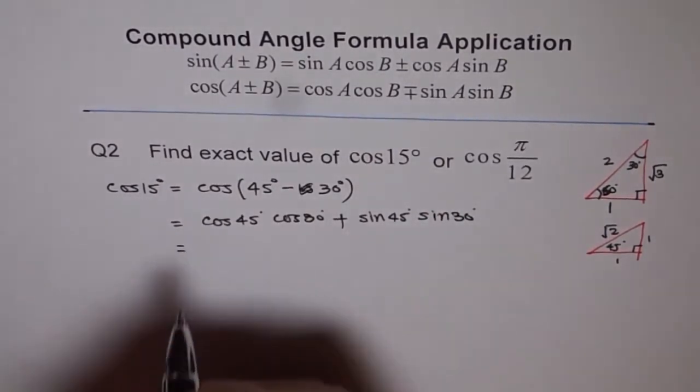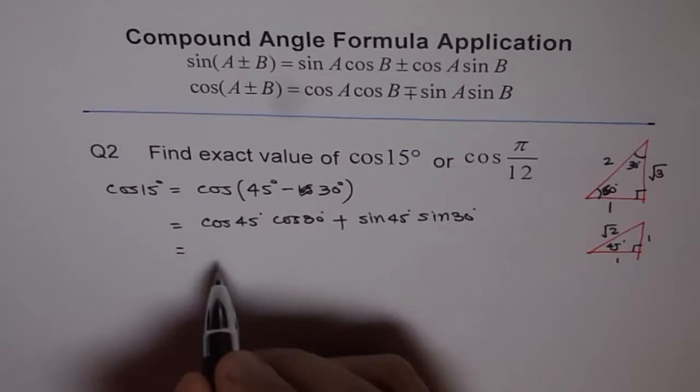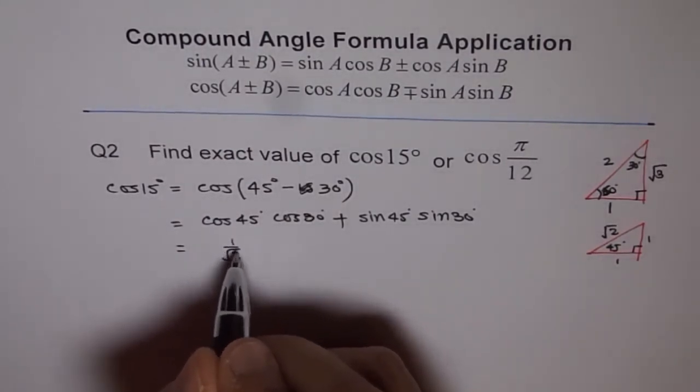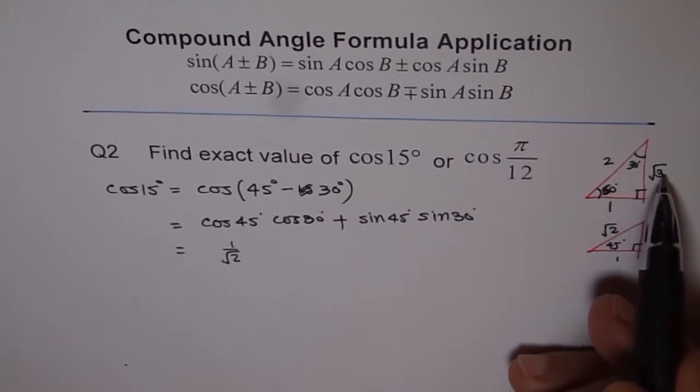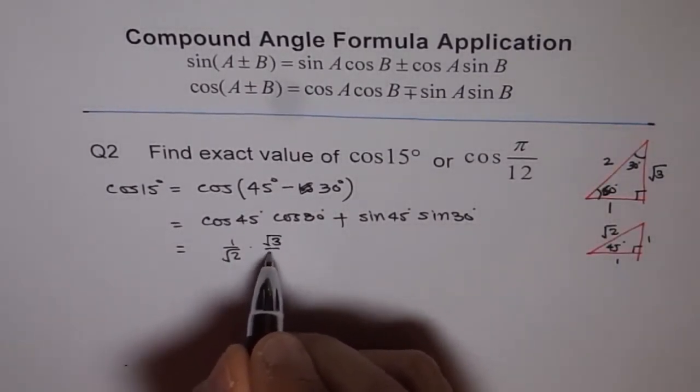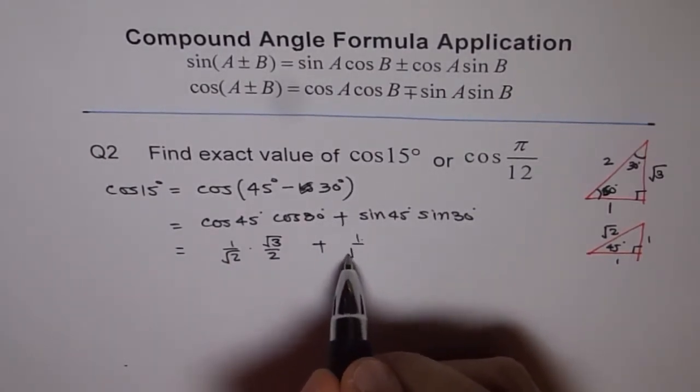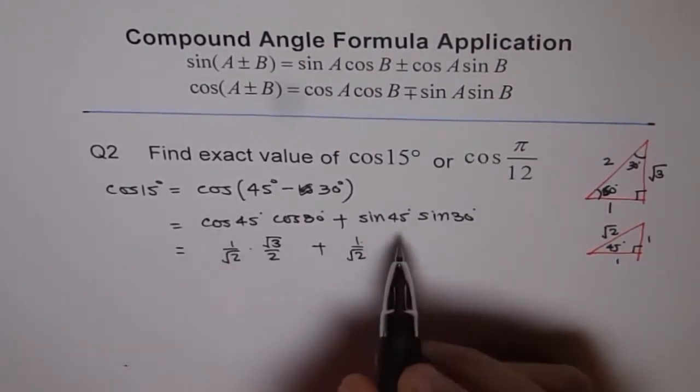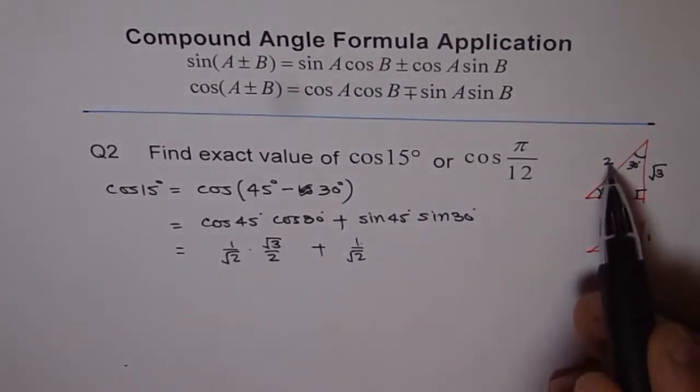Now what is cos of 45 degrees? Let's have a look at this triangle. 1 over square root 2. Adjacent side. And cos of 30 degrees is, look from here, adjacent is square root 3 over 2 times square root 3 over 2 plus sin of 45 is 1 over square root 2. Same as cos 45 and sin of 30 degrees is opposite side of 1 over 2.